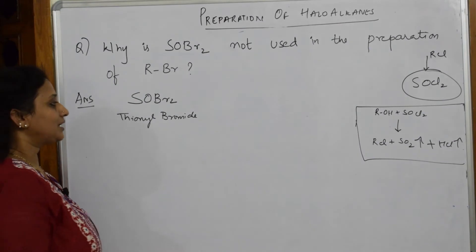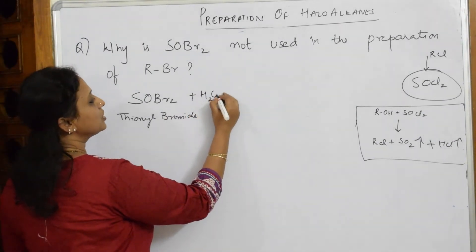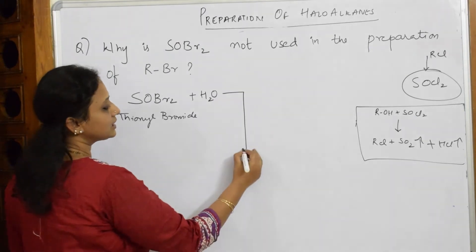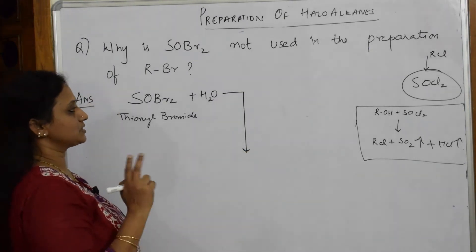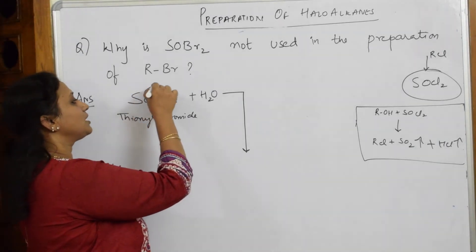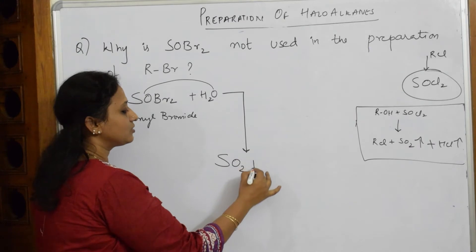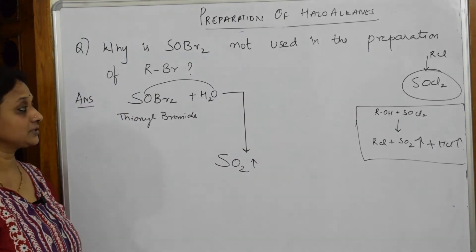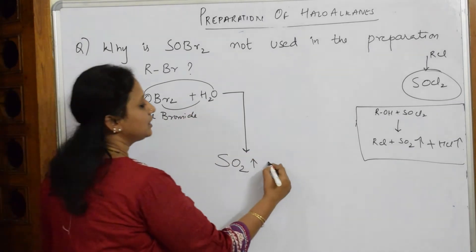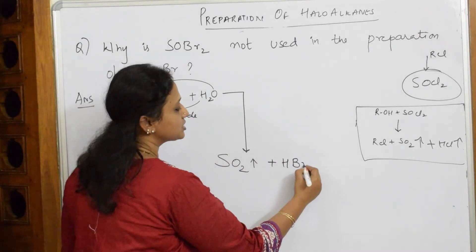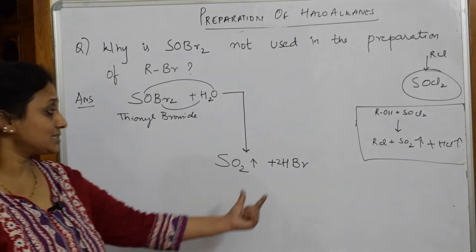Here, what happens is thionyl bromide when it comes in contact with moisture or water immediately dissociates into two important compounds. Observe: this sulfur combines with oxygen and becomes sulfur dioxide gas, which is poisonous. Next, these two HBr combine to form HBr and SO2.